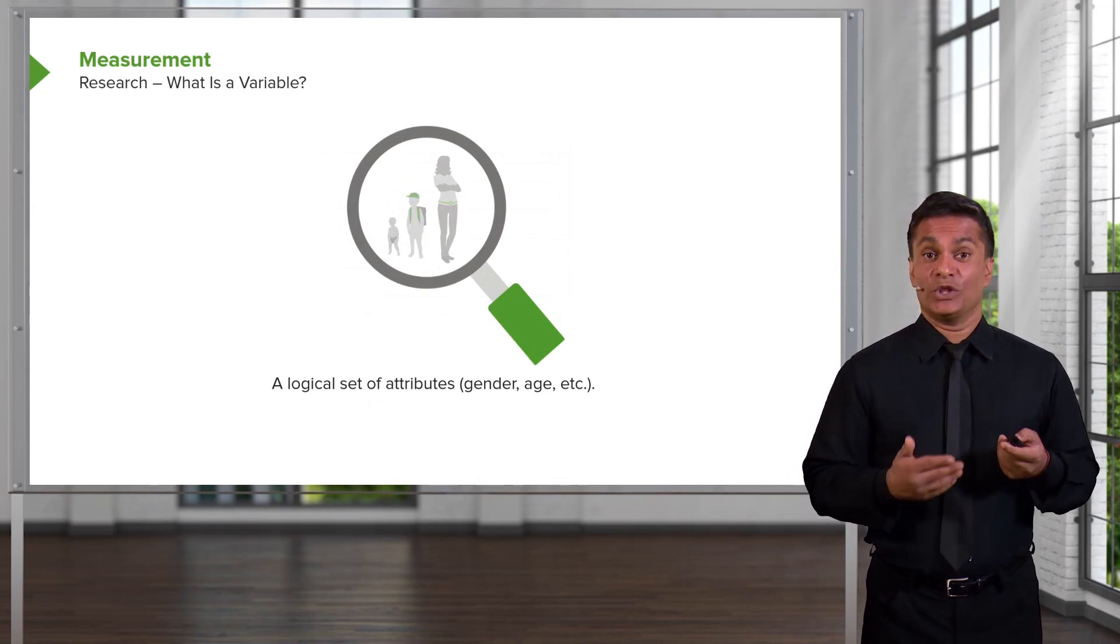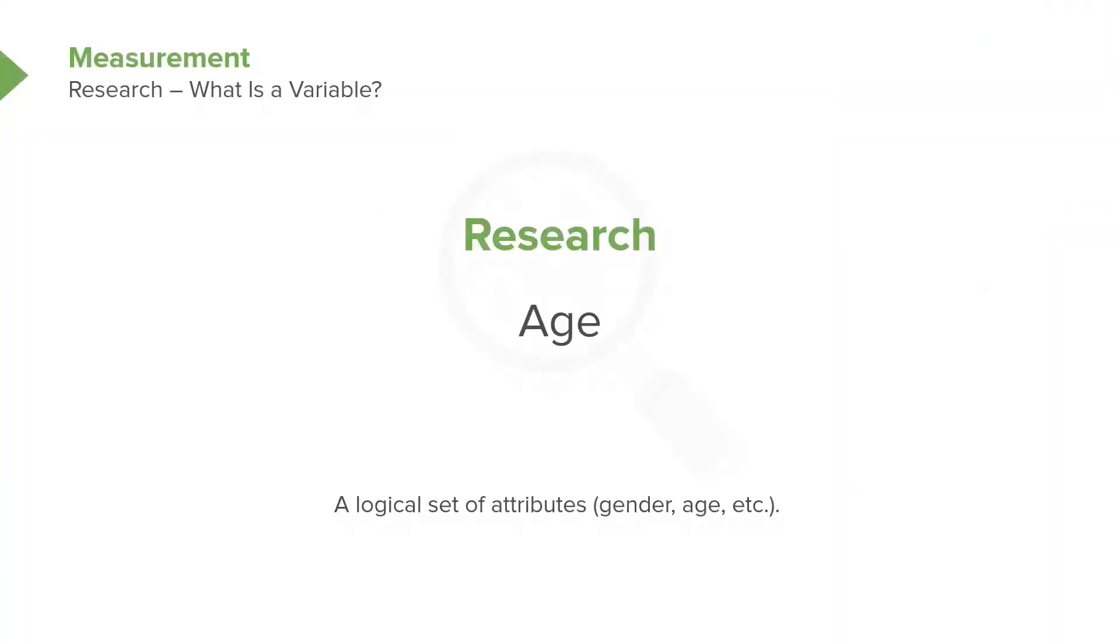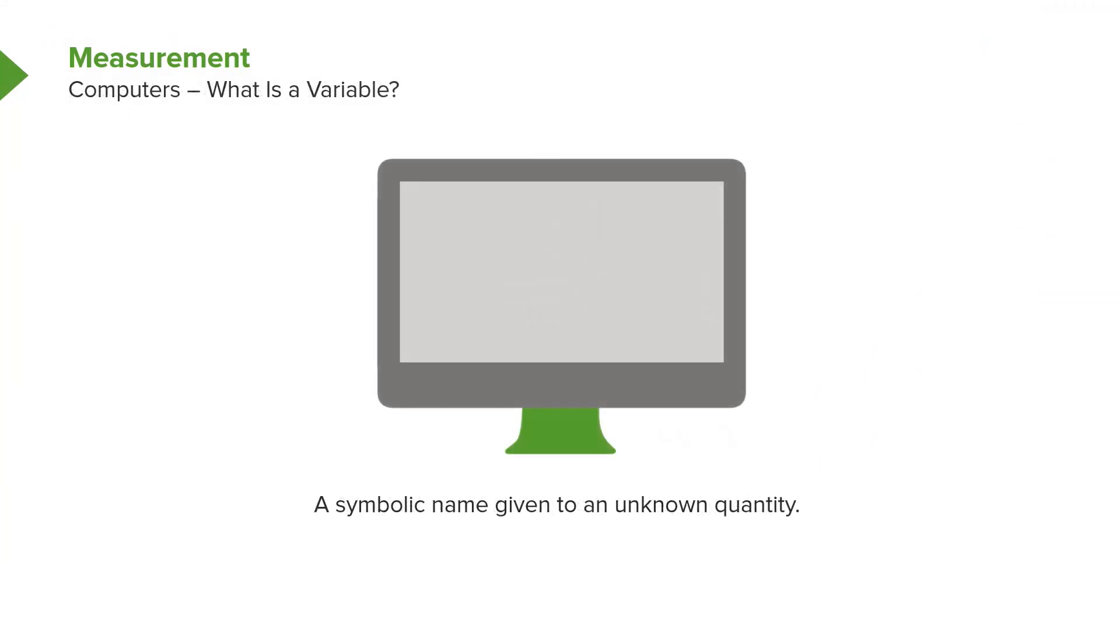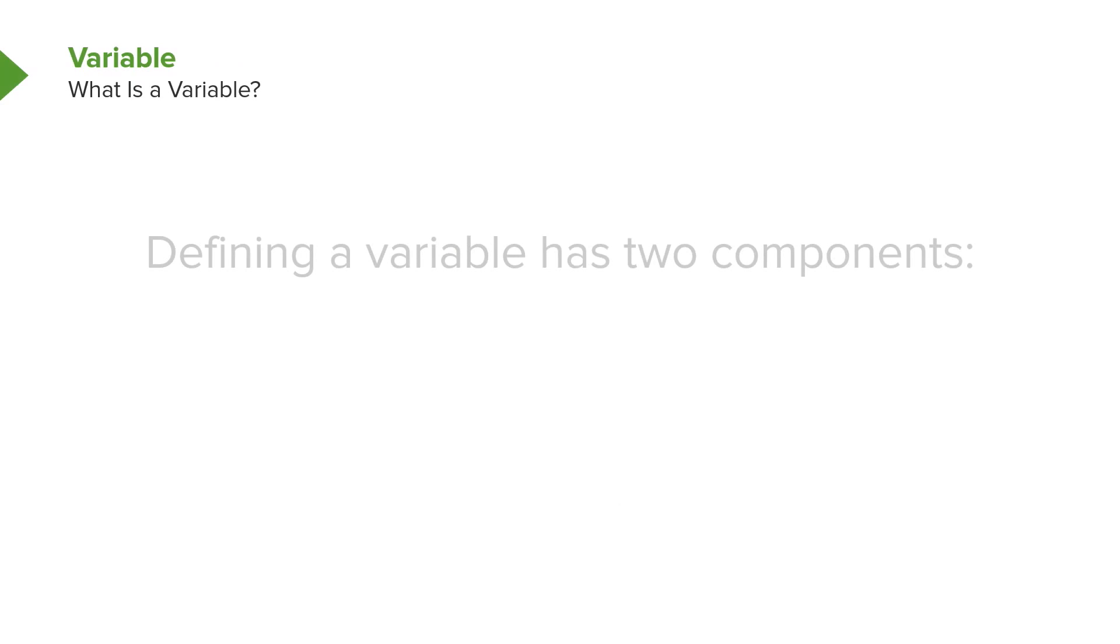In research, a variable is a logical set of attributes like gender or age, something we want to learn about. And in computer science, a variable is just a symbolic name given to an unknown quantity. So the word variable is used in a variety of contexts depending upon the discipline that you come from.